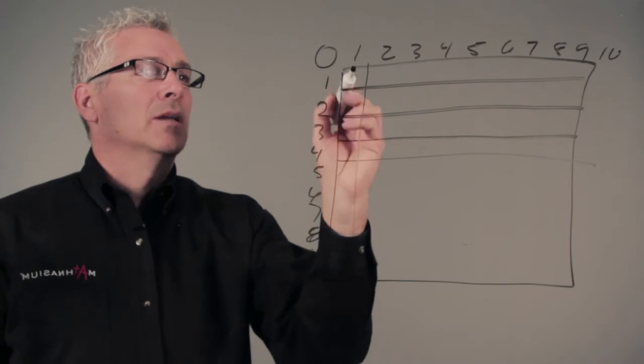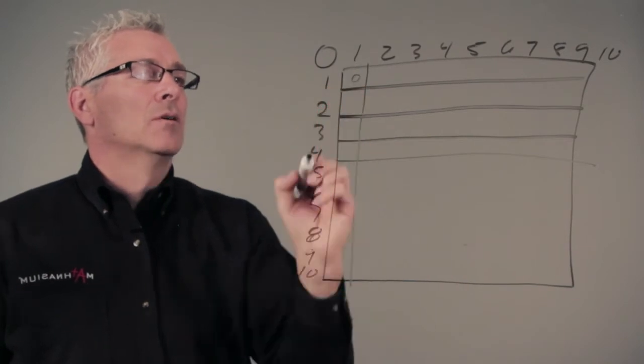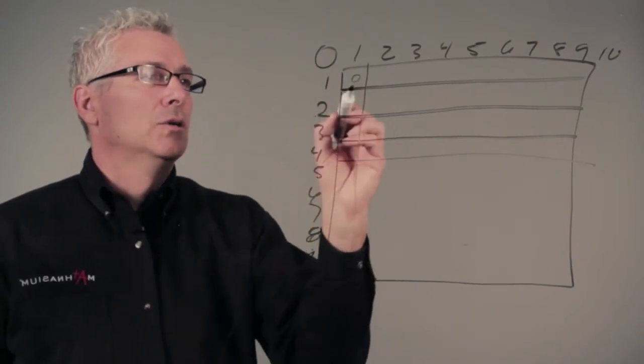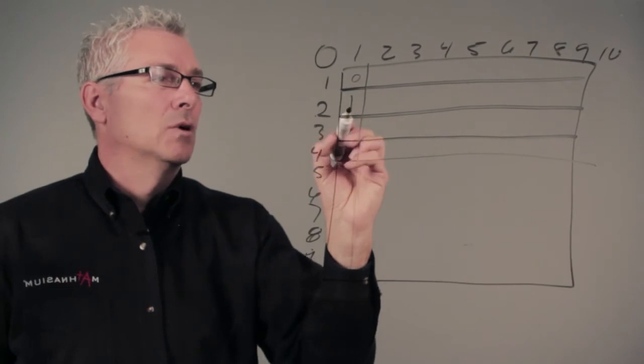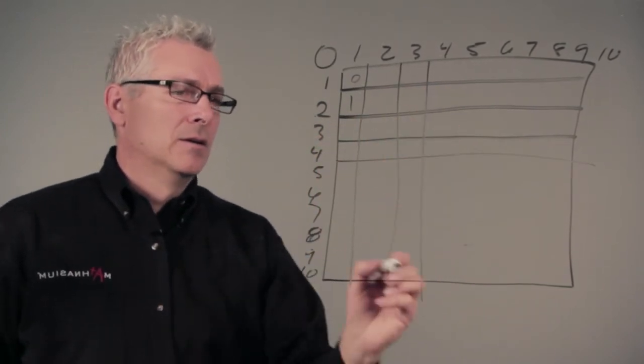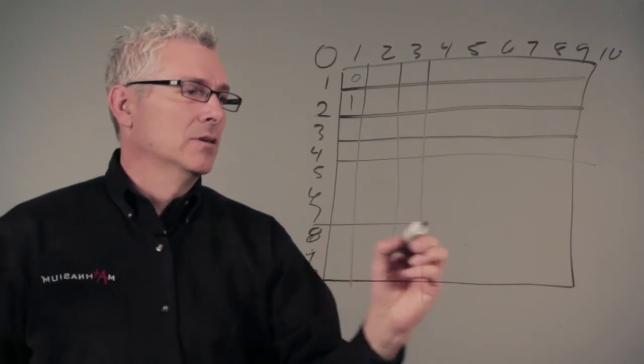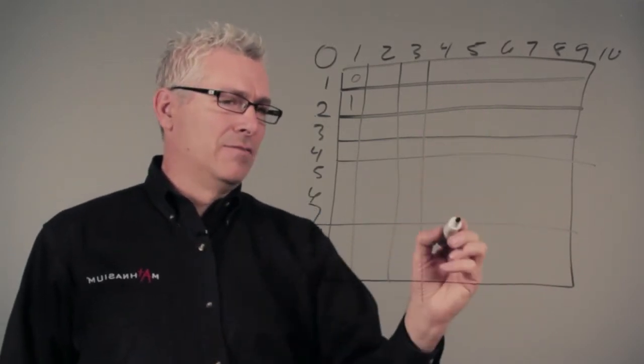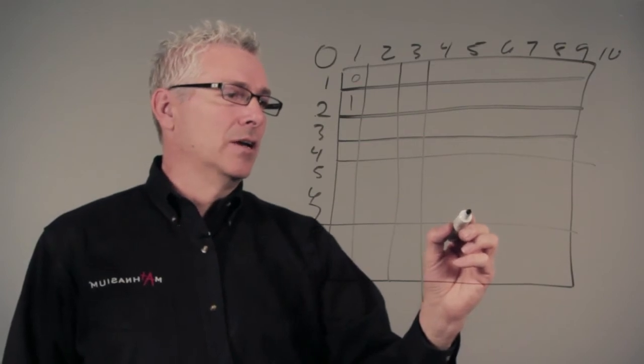We're going to say 1 minus 1 is 0. We're going to say 2 minus 1 is 1. We could go further out and say what is 7 minus 5? That's going to give us a 2 right here.